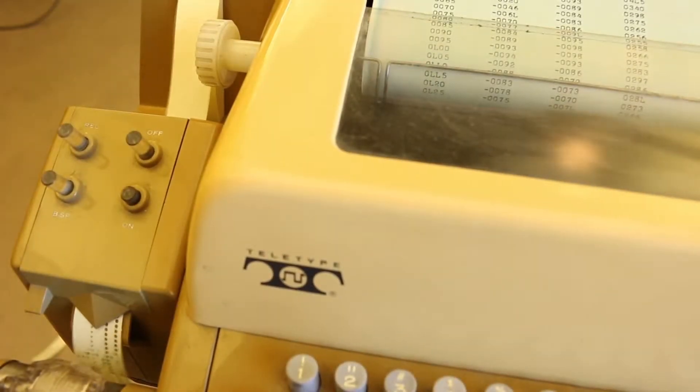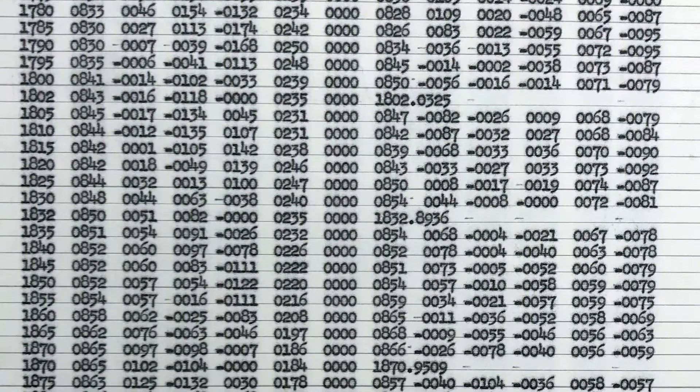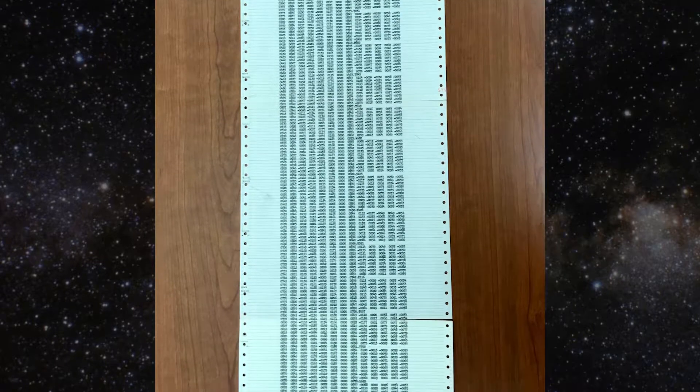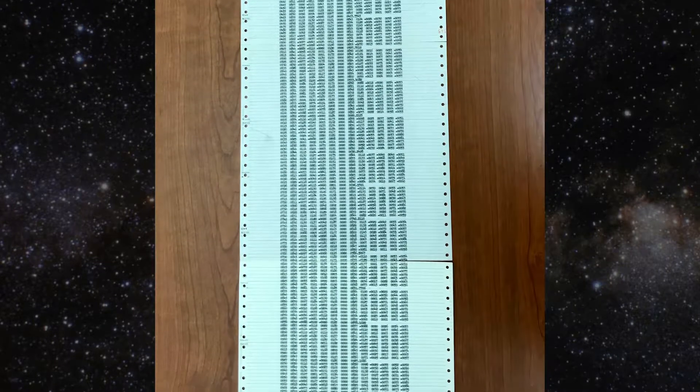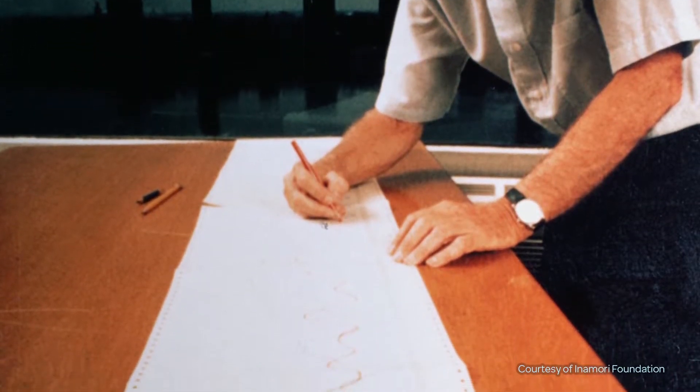In 1961, Lorenz was working with a set of equations that represented a simplified version of the atmosphere, with 12 variables that changed over time. The computer calculated the values for each moment in time by applying the equations to the values from the previous moment, and Lorenz watched how they progressed.